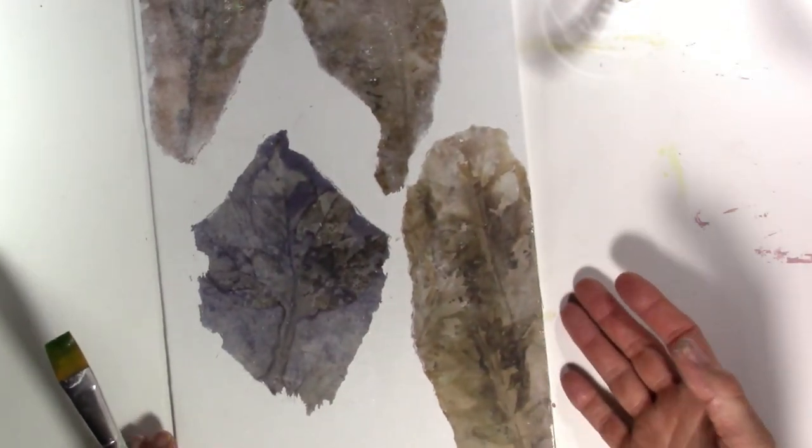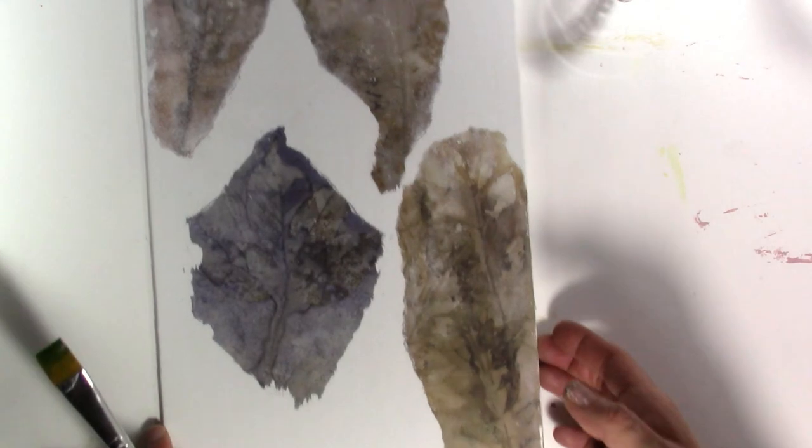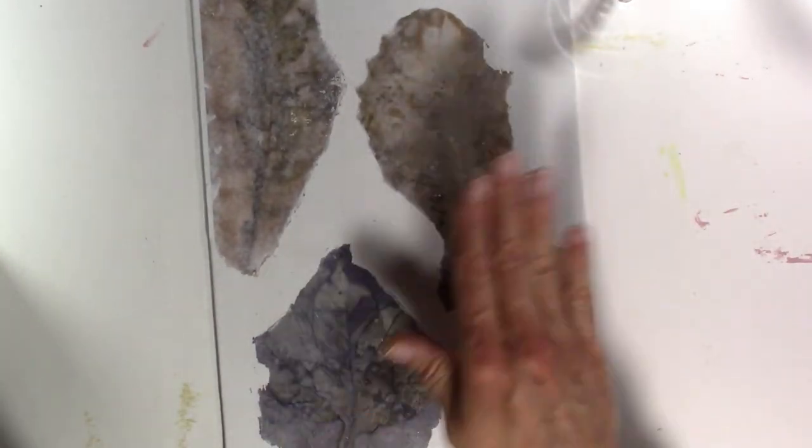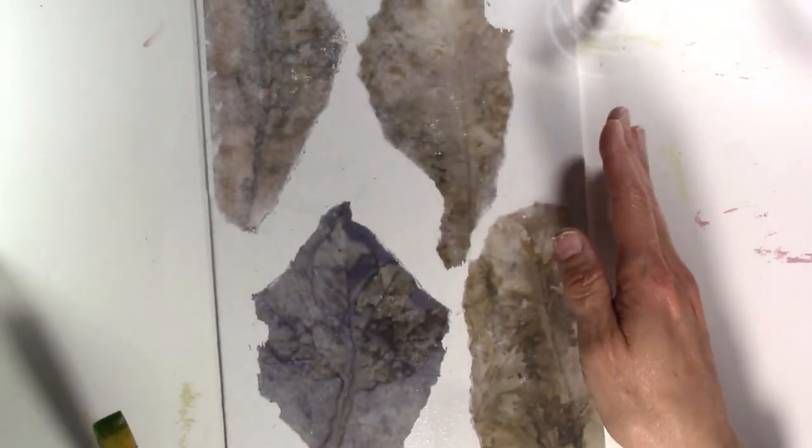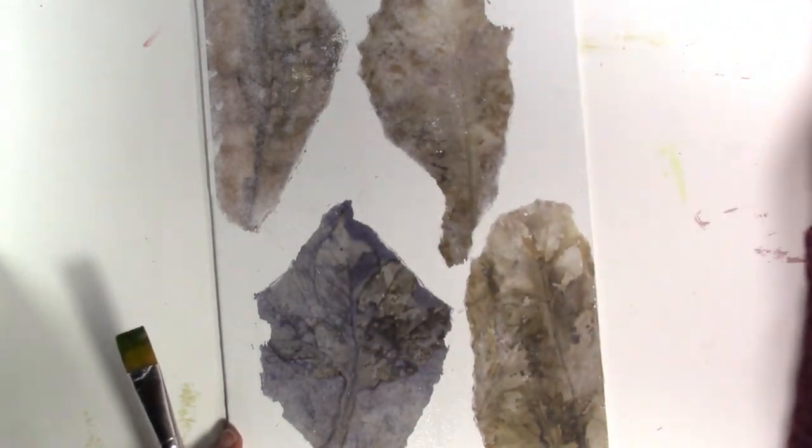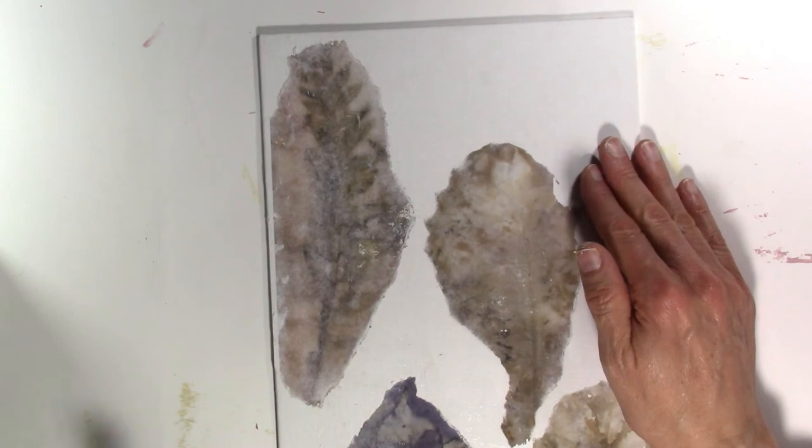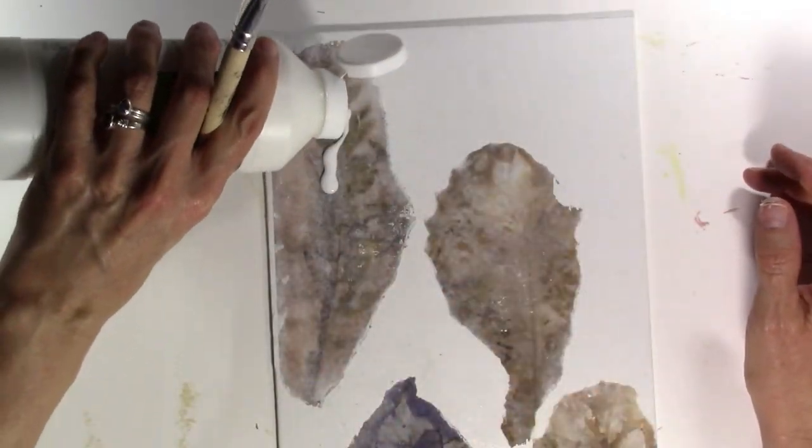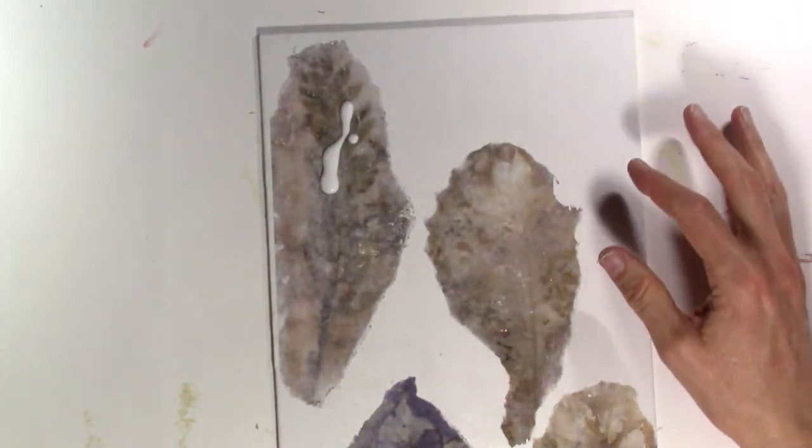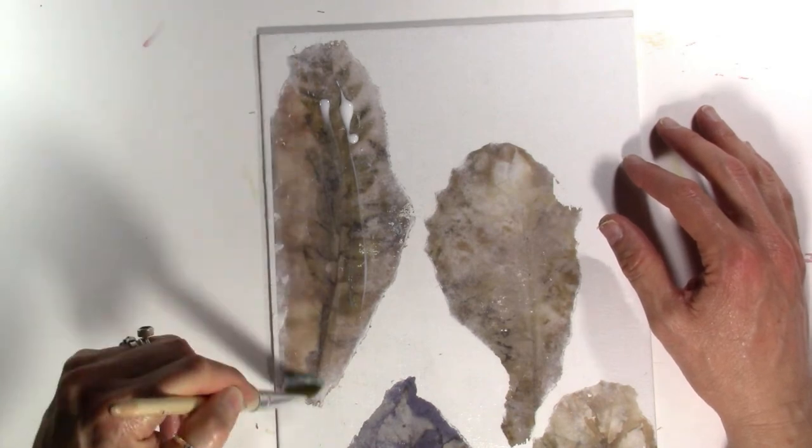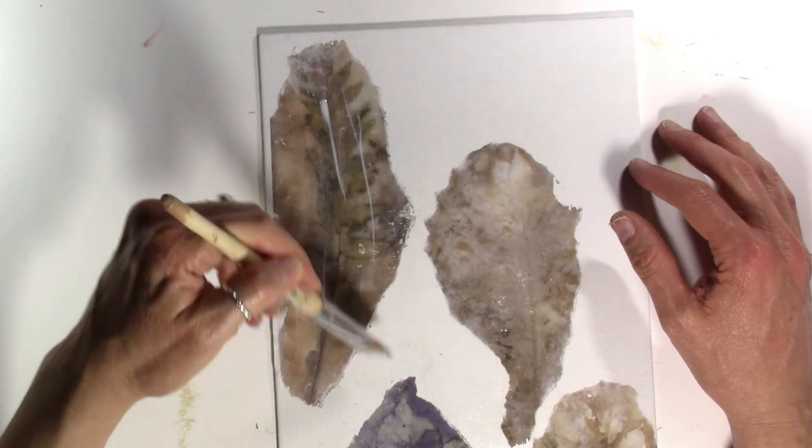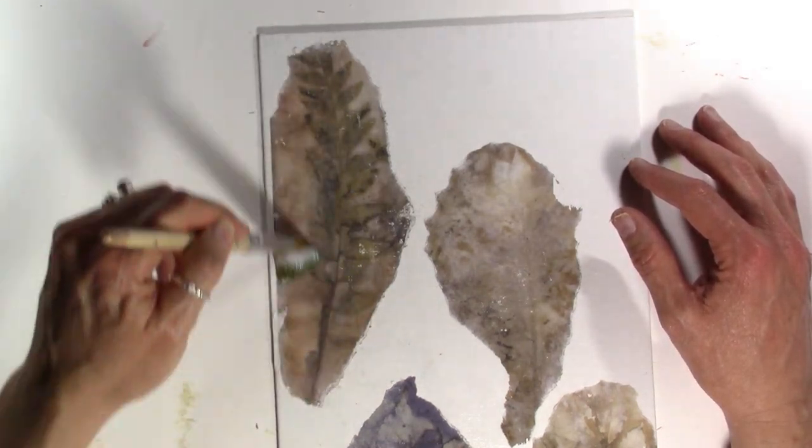Let's go ahead and put some of this Liquitex matte medium on here. I like to just pour it right on. Look at how beautifully that brings this image forward. I've already done that to these two, so you can see this one looks pretty good and this one is kind of faded. I can pick and choose what to keep later on when I'm working on this piece and what to cover up.